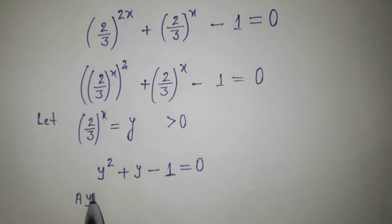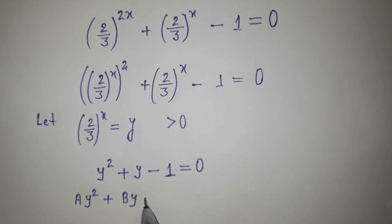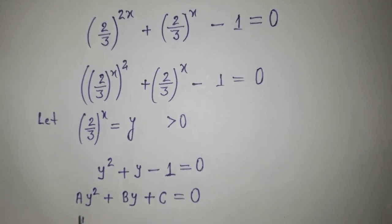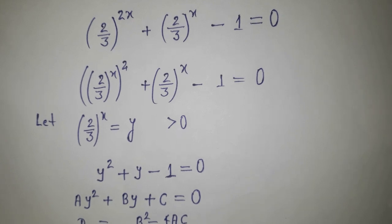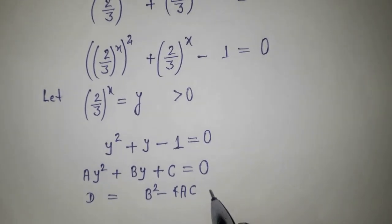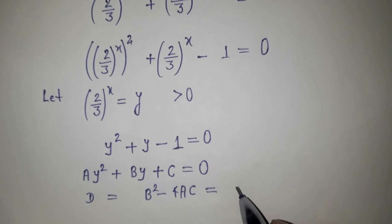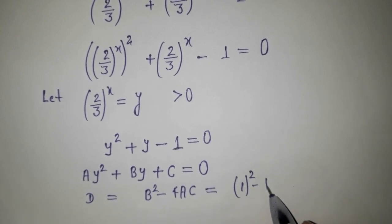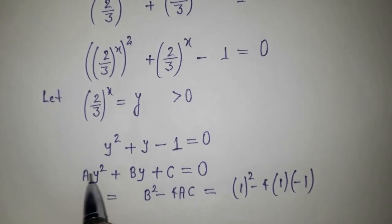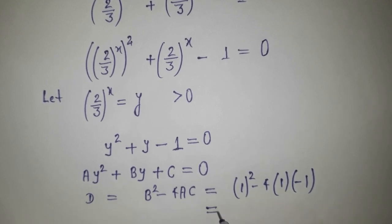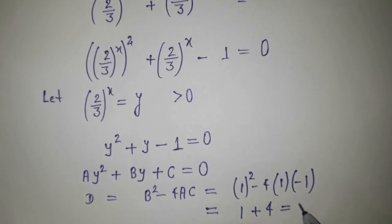This is the standard quadratic equation ay squared plus by plus c equals 0. The discriminant is b squared minus 4ac. Here a is 1, b is 1, c is minus 1, so discriminant equals 1 squared minus 4 times 1 times minus 1, which is 1 plus 4, that is 5.